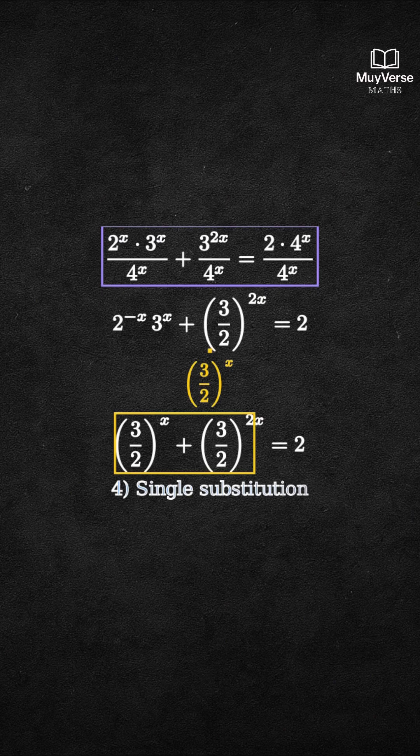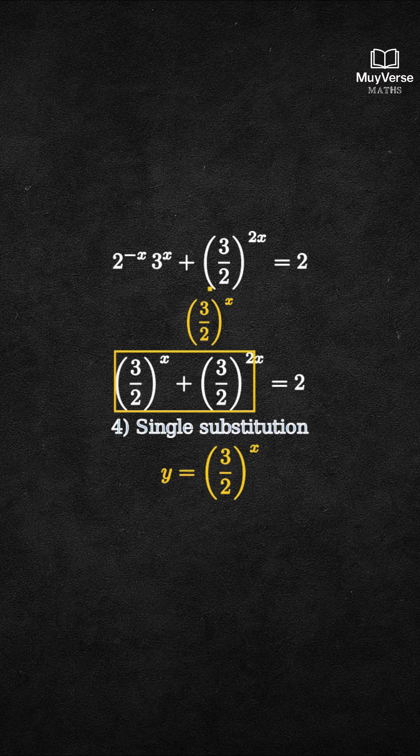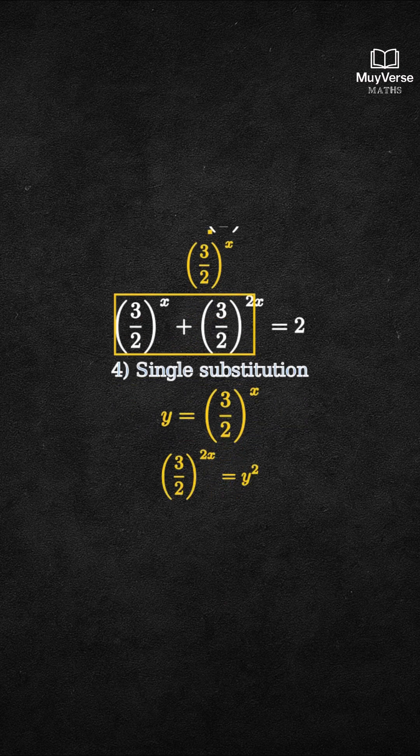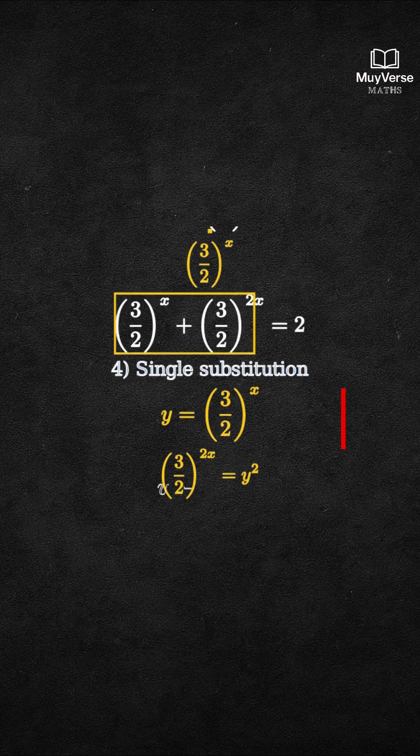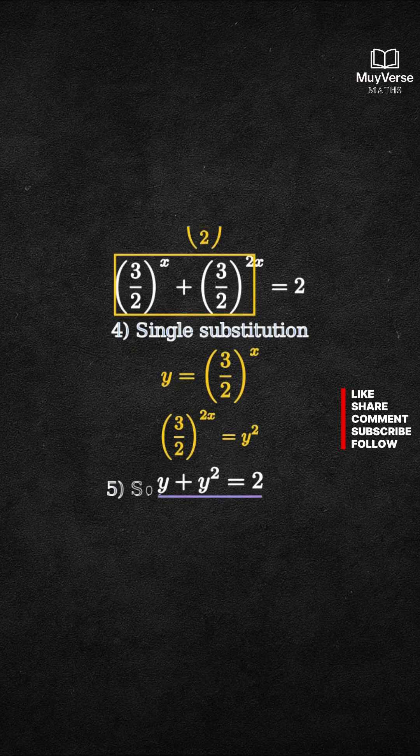Step 4. Make a clean substitution to reveal a quadratic. Let y be the quantity 3 over 2 to the x. Then 3 over 2 to the 2x equals y squared. So the equation becomes y plus y squared equals 2.